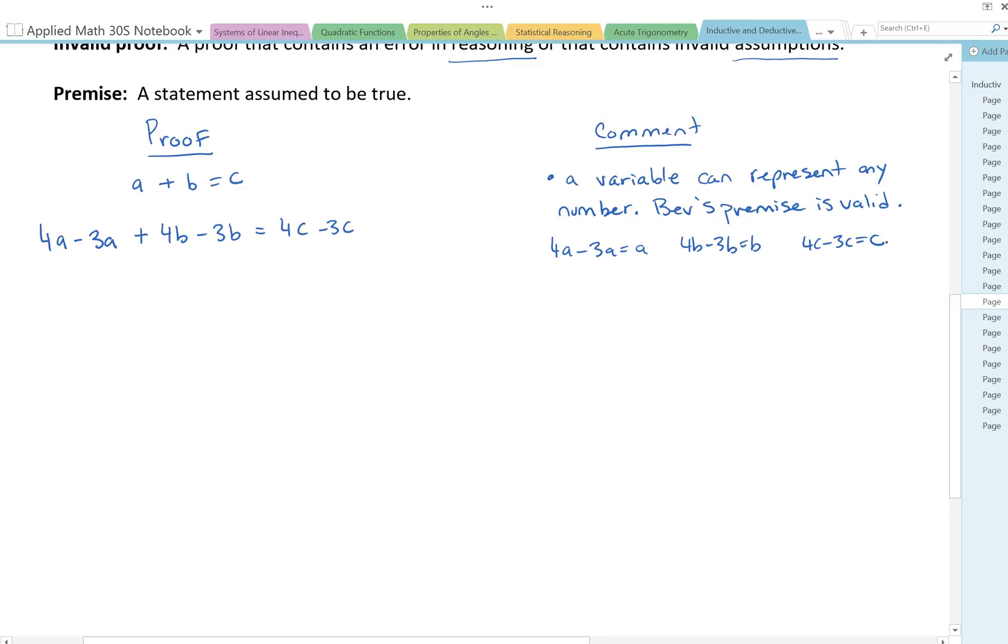Then he reorganizes it, getting all the 4s together and all the 3s together. So we've got 4a plus 4b, and then the 4c comes to the other side so it changes signs. Same with the 3s. Move the negative 3a over so it becomes positive 3a. Move the negative 3b over, that becomes positive 3b. And I've got negative 3c on this side. The reorganizing is correct. Then he factors out the 4, common factoring of both sides. Take the 4 out, left with a plus b minus c. Factor out the 3, a plus b minus c. Common factoring is fine.